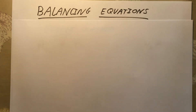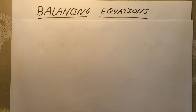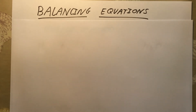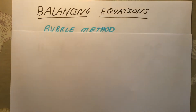Hi, in today's video we're going to go through how to balance symbol equations, which is one of the really important skills to be able to do when it comes to GCSE chemistry. It accounts for between 6 and 10 marks in every exam paper, so it's really important you get very confident with doing this. Today I'm going to go through one method nice and slowly, called the bubble method.